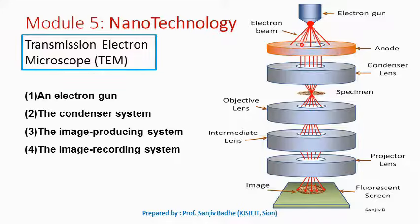The anode is provided with an aperture, so the electrons can pass through this aperture.